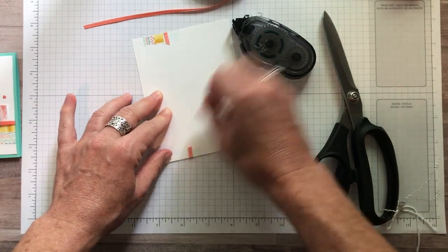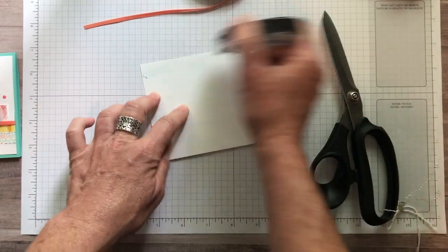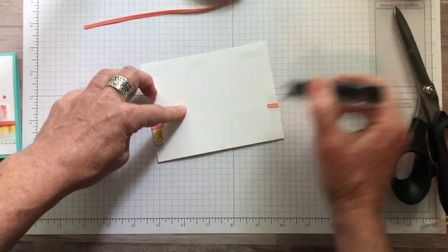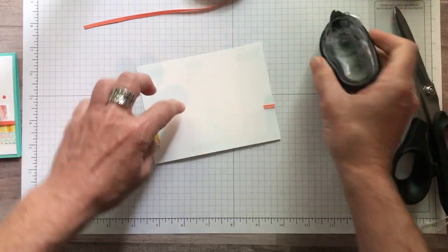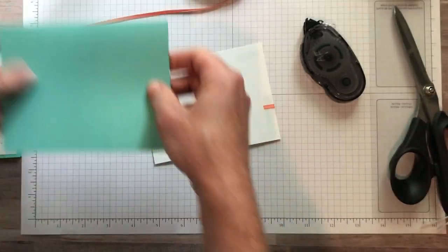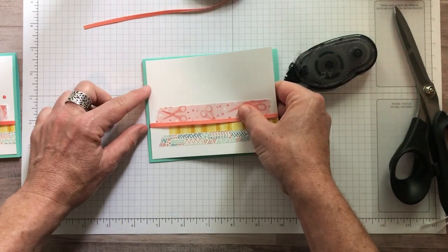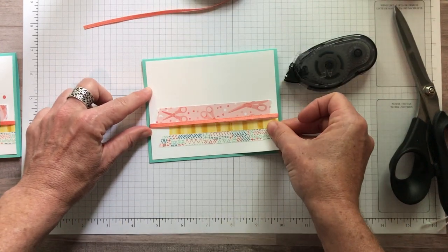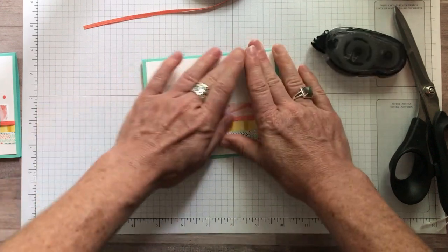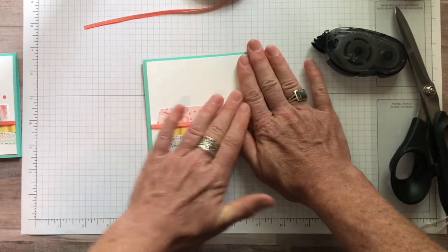Then again, I'm going to push really firmly. I'm going to add some more adhesive. Let's get those scissors out of the way, scissors, skizzers, you know. We added our adhesive, we are going to just put this whisper white piece of cardstock down on there and press firmly.